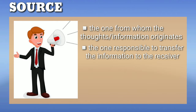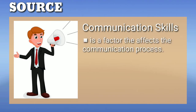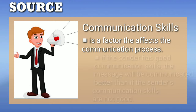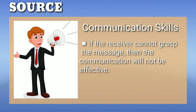The source transfers his information to the recipient with the help of communication skills, attitudes, knowledge, social system, and culture. The first factor is communication skills. The communication skill of a person affects the communication process. If the sender has good communication skills, the message will be communicated better than if the sender's skills are not good. The speaker must know where to take pauses, where to repeat sentences, how to speak a particular sentence, and how to pronounce a word.